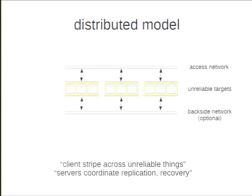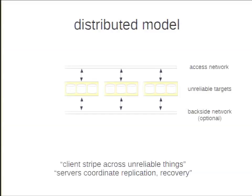In Ceph's case, there's usually a front-end network and optionally a back-end network that handles replication and data migration traffic. The key idea is that the servers are coordinating replication and recovery. In a typical deployment, you'll have a node with a whole bunch of disks. On top of each local disk you'll have a local file system — we don't want to reinvent block allocation. We like to use BtrFS, but people usually use XFS for stability reasons. Typically you have about 15 disks per rack mount server, and a whole bunch of these servers — tens, hundreds, thousands — making up your storage cluster.